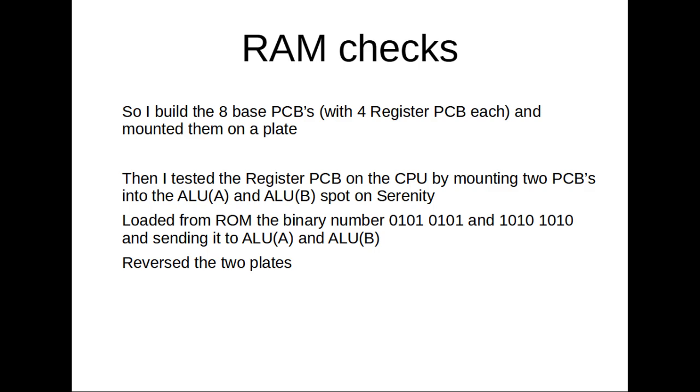Two questions about RAM. One is how did I do the check? Well I just put them into the ALU-A and ALU-B spot on Serenity and loaded from ROM the binary number 0101 0101 and 1010 1010 and sent it to ALU-A and ALU-B. And then I reversed the two plates and then I had a good view of if all bits did their thing.